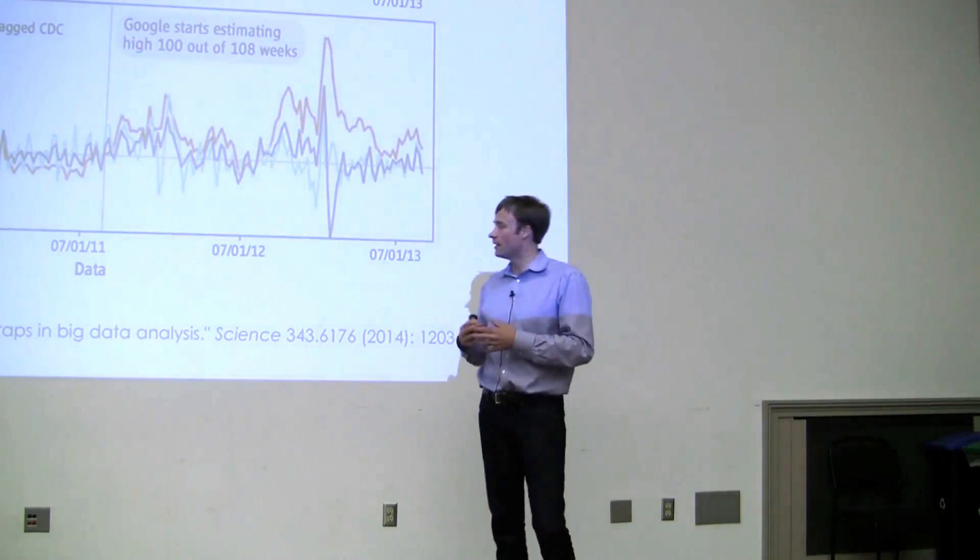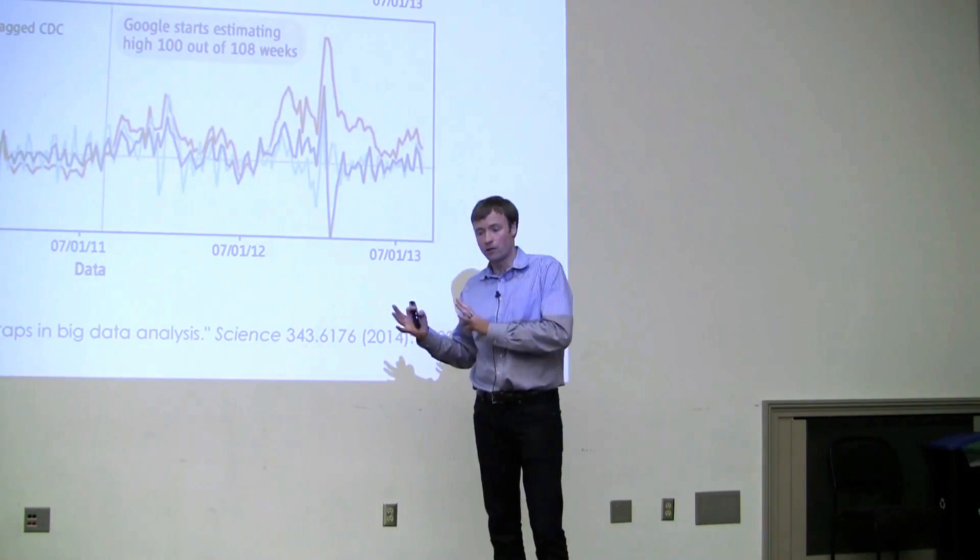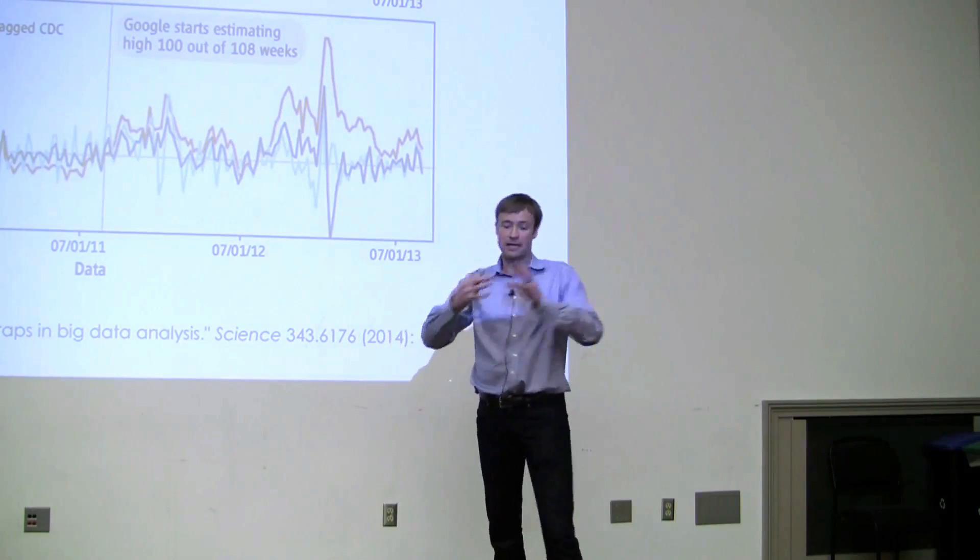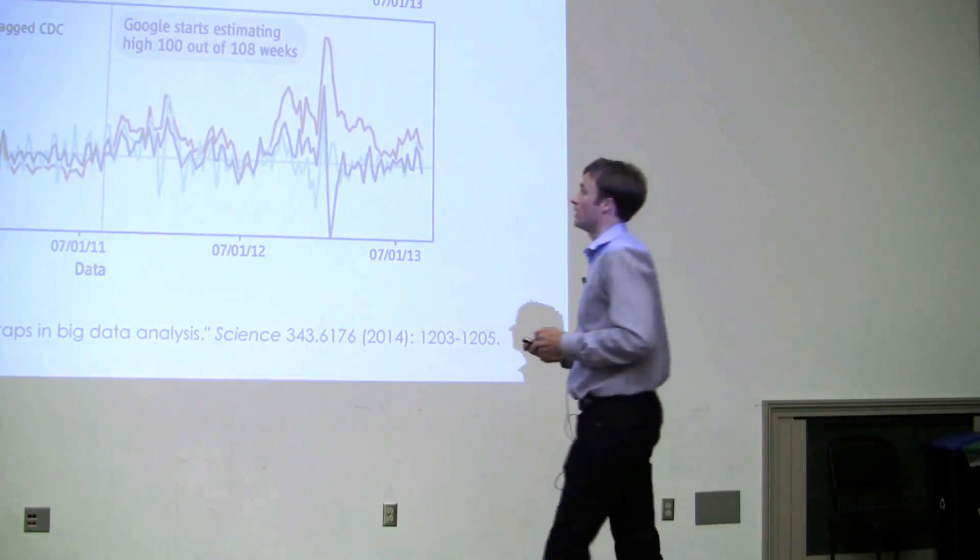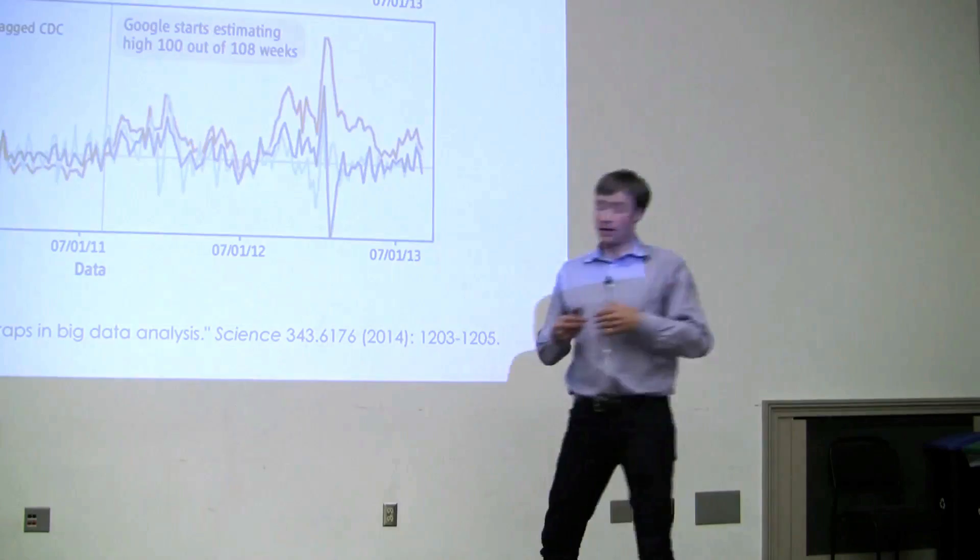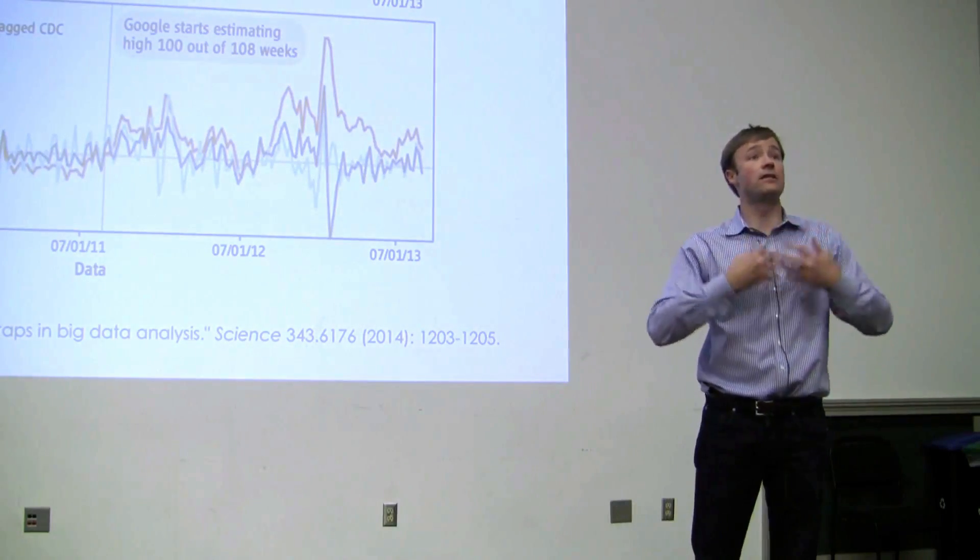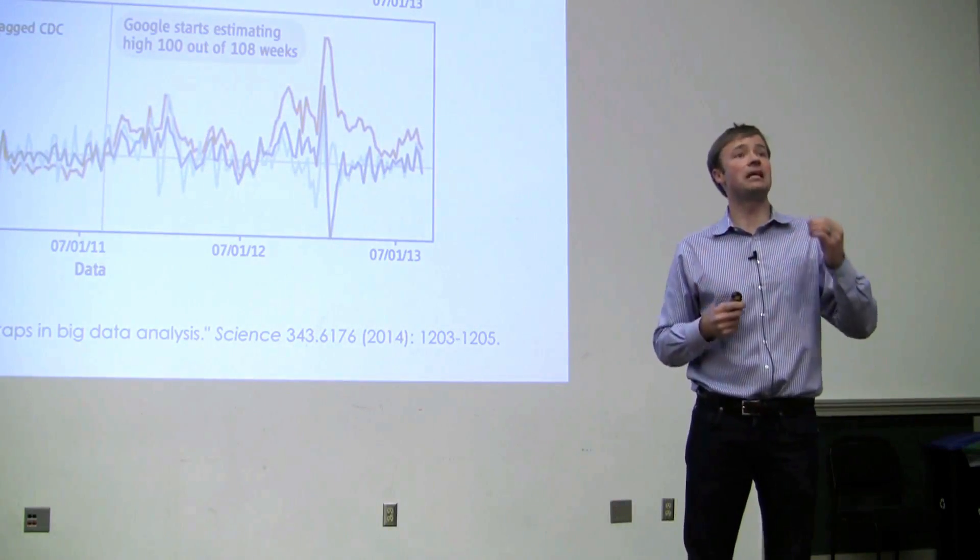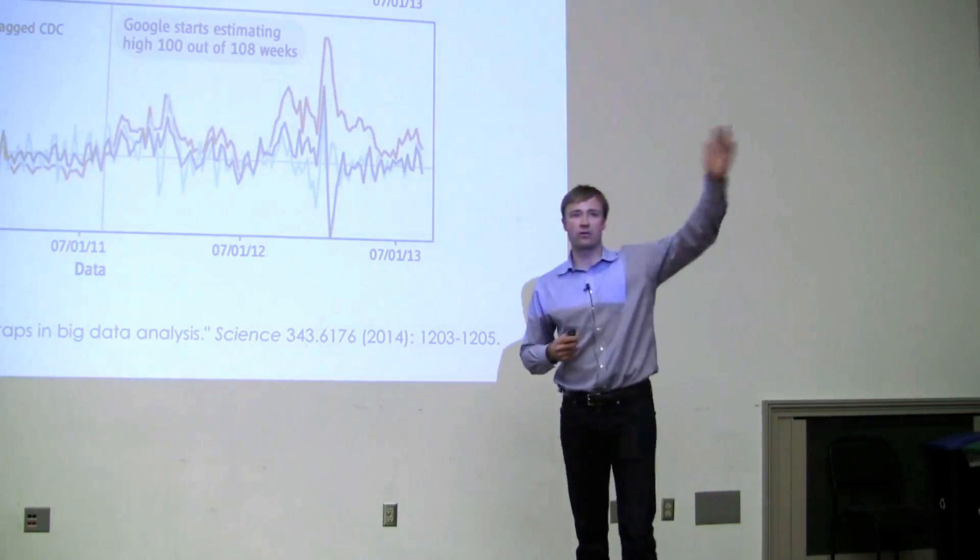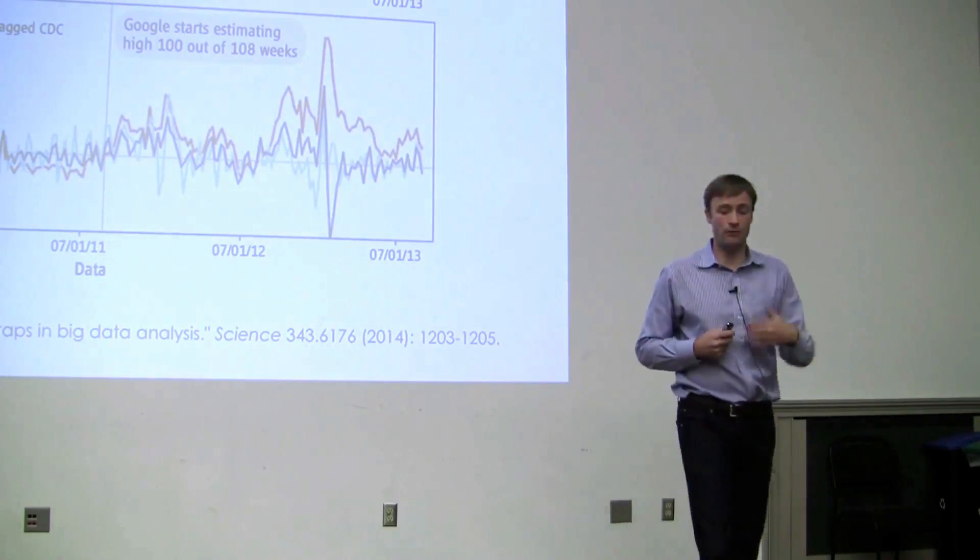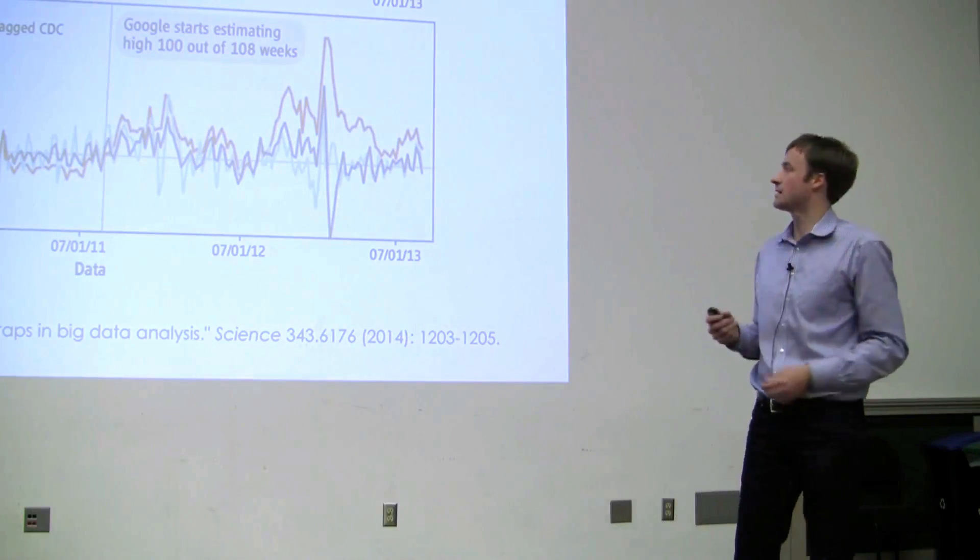So they wrote this very really, I think, important article. And what I like about it is they say, here's where it went wrong. But we still think that this sort of thing can be useful. We just need to complement rather than supplement. So this big data hubris is this idea that all we need is the data. We don't need any of these other traditional methods of doing flu prediction or whatever your task is.